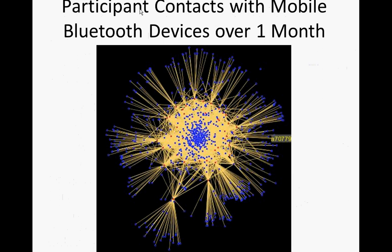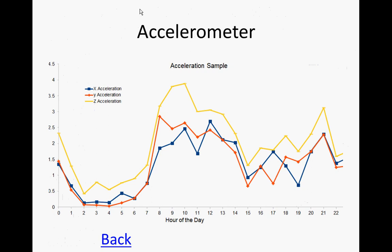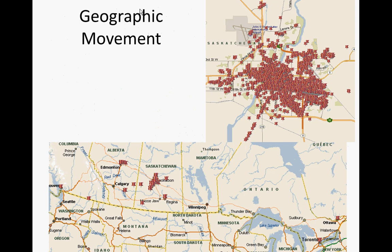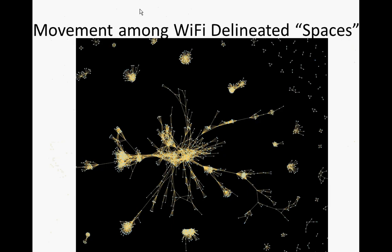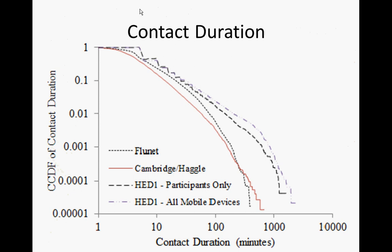I'll show some examples of sorts of data that can be collected from particular sensors, such as participant-participant contacts — with participants shown in red — or contacts with other non-participants as judged by the presence of discoverable smartphones, shown in blue, over the course of one month. Accelerometer data related to physical activity throughout a day, aggregated over participants for different times of day, and geographic movement both within a city and across a country. We can also indicate people's movement between various spaces, mapping out the spaces in which individuals circulate and the amount of time they spend in different spaces — information that is hard to elicit through traditional survey instruments.